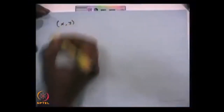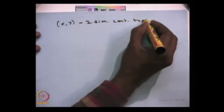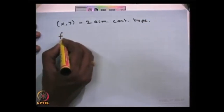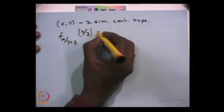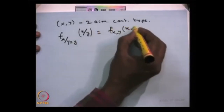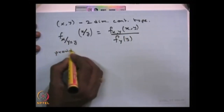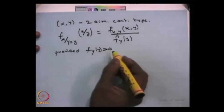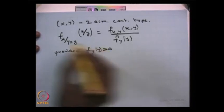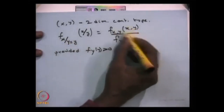Now, in the same way, we can define the conditional distribution for two-dimensional continuous random variables. You can define the probability density function of X given Y takes a value y — that is f(X|Y) — as the joint probability density function f(X, Y) divided by the marginal distribution f(Y), provided f(Y) is strictly greater than 0. Wherever the density is greater than 0, you can find the distribution of X given that Y takes the value y. This is simply the ratio of the joint distribution to the marginal distribution.